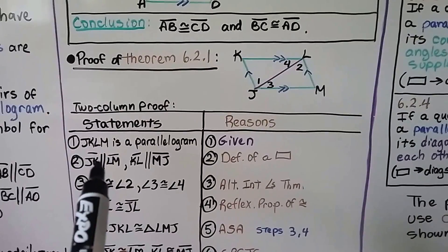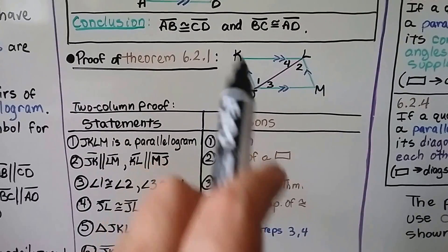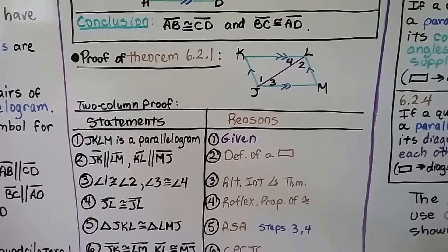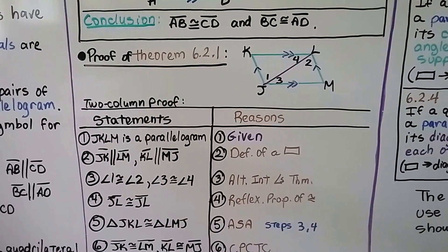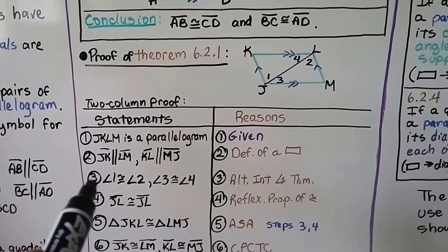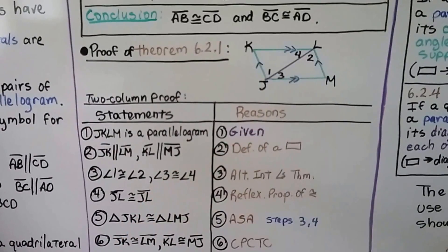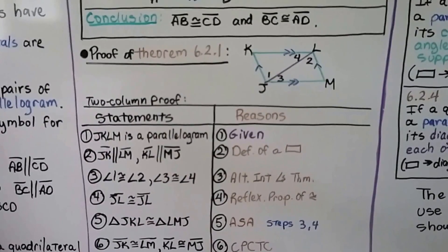Segment JK is parallel to segment LM. This is parallel to this. And KL is parallel to MJ. That's the definition of a parallelogram. Number three, we've got angle 1 is congruent to angle 2, and angle 3 is congruent to angle 4. That's alternate interior angles theorem.